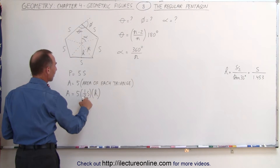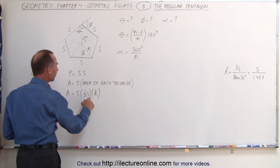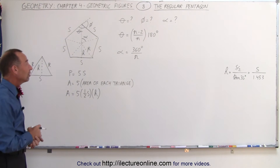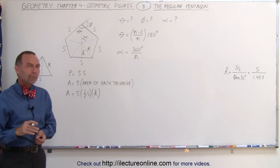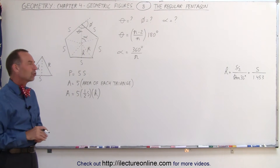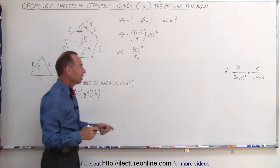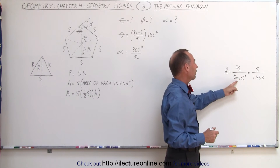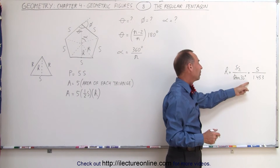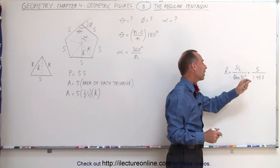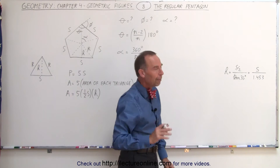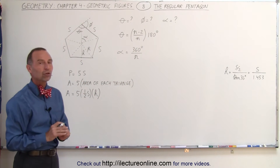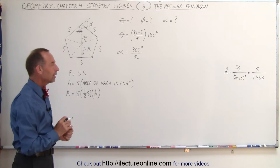Since the base is S, half the base would be half S times H. The only thing left to do is figure out what H is equal to. That takes a little bit of trigonometry, and it turns out we can find H by saying it's half of S divided by the tangent of 36°, which is basically S divided by 1.453, approximated to three decimal places. For now that's good enough — we'll just use that number when we need it.